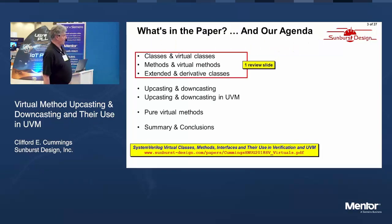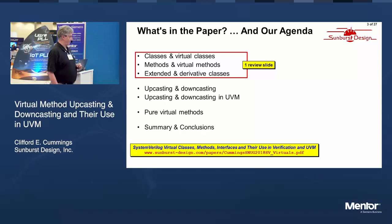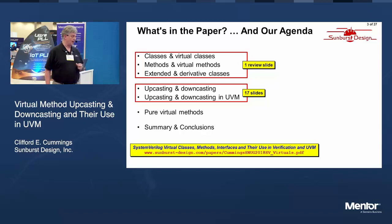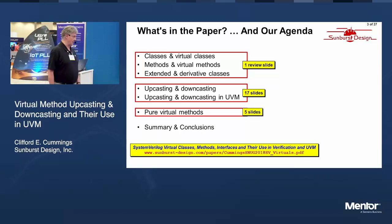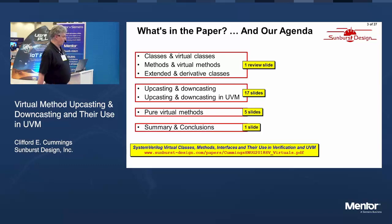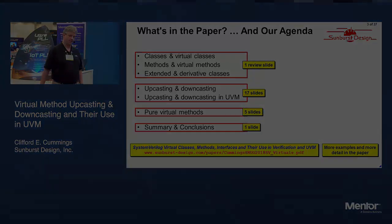What we're going to talk about: I'll give you one quick review slide about classes and virtual classes, then we'll talk about methods, virtual methods, and extended and derivative classes. We'll spend the bulk of our time on upcasting, downcasting, and how you see these used frequently inside of UVM. We'll also cover pure virtual methods and where they're used inside of UVM testbenches, then finish with a summary and conclusion. There's much more detail you can find inside of the paper.